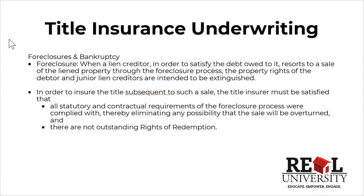They are foreclosures and potential bankruptcies. A foreclosure occurs when a lien creditor — i.e., the lender — has to satisfy the debt that's owed. The owner of the property got behind and didn't make the payments, forcing a foreclosure. They have to resort to a sale of the liened property through the process. Most states, including Indiana, Florida, and Oklahoma, require that it go to a sheriff's sale to satisfy that debt. The property rights of the debtor, which is the lien holder, and potentially any other junior liens could get wiped out or extinguished, though those could still show even after a person went through foreclosure.